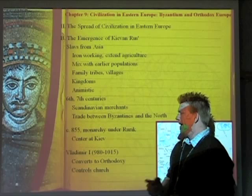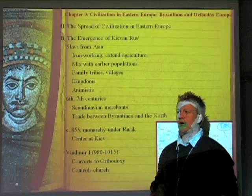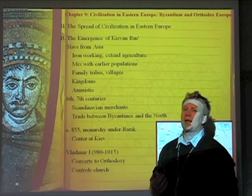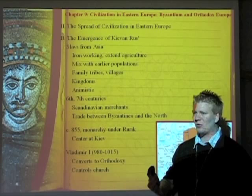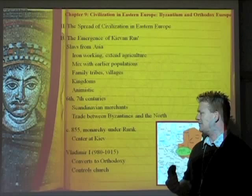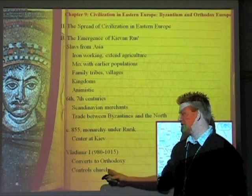Vladimir I, ruling 980 to 1015, converts to Orthodox Christianity. He rejects Catholicism because priests cannot marry and he doesn't want to be under the Pope. He rejects Islam due to its restrictions on meat and alcohol — importantly, being Scandinavian, alcohol was seen as warming the blood in cold weather. So Vladimir converts to Orthodox Christianity, establishing Caesaropapism — one person in charge of both the church and the empire.